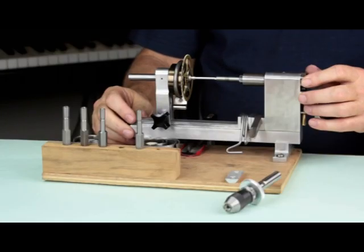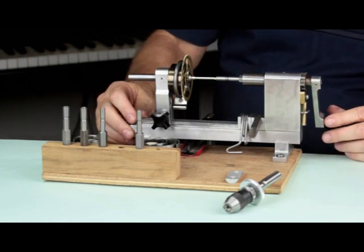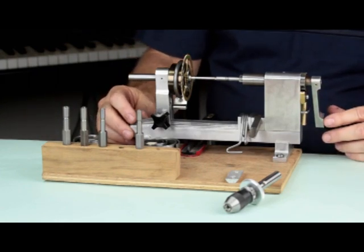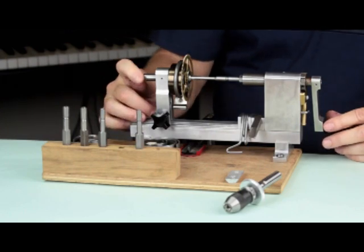To get our mainspring off the winding arbor, we need to remove the clamp we installed when we disassembled the movement. To do this, we must wind the spring up to make it smaller in diameter so the clamp will slip off.